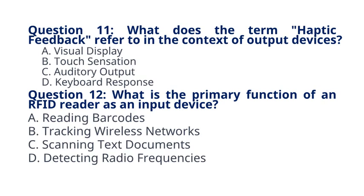Question 12: What is the primary function of an RFID reader as an input device? A. Reading barcodes. B. Tracking wireless networks. C. Scanning text documents. D. Detecting radio frequencies. The correct answer to question 12 is option A: Reading barcodes. RFID readers are used for reading information stored on RFID tags, often used in logistics and inventory.